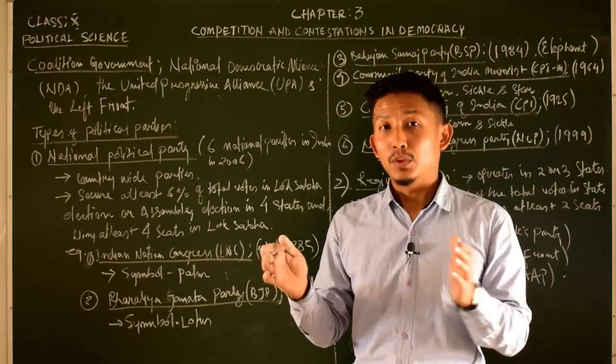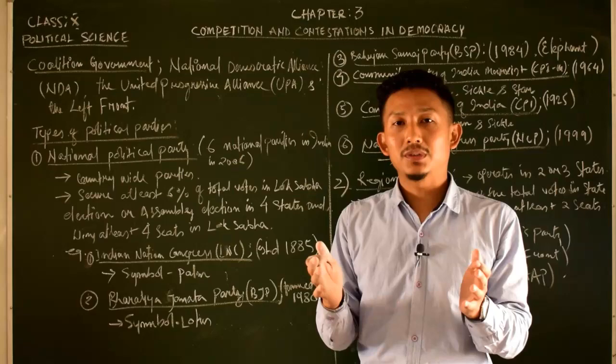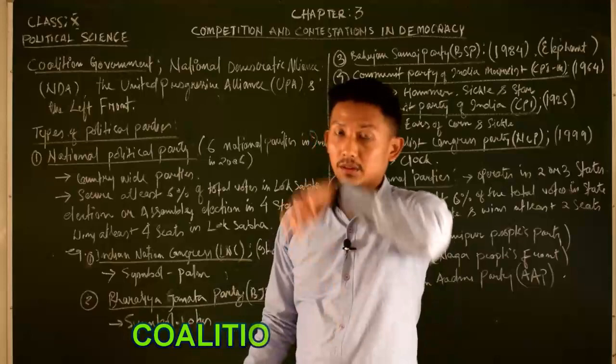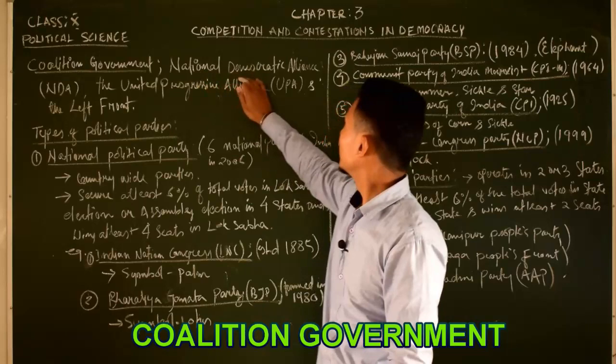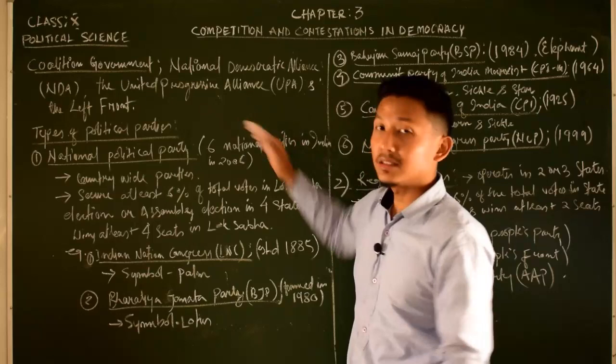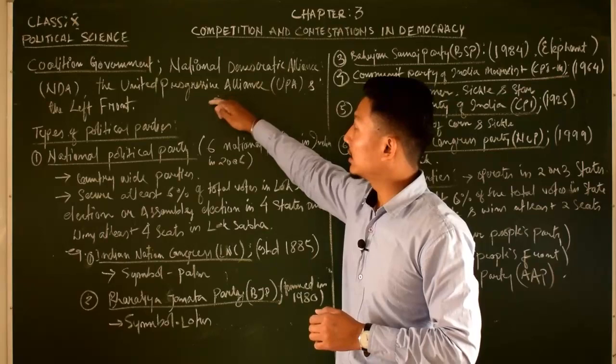There is a coalition government. Examples of coalition government include the National Democratic Alliance (NDA), the United Progressive Alliance (UPA), and the Left Front.